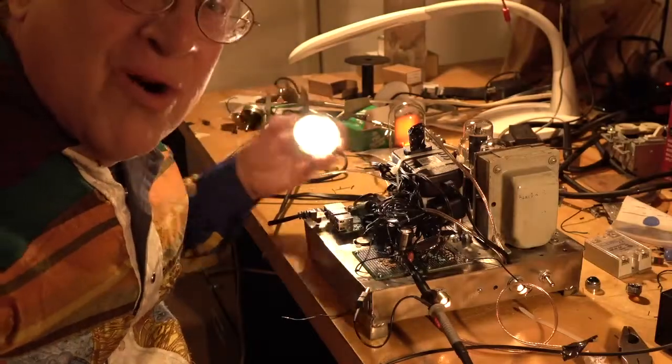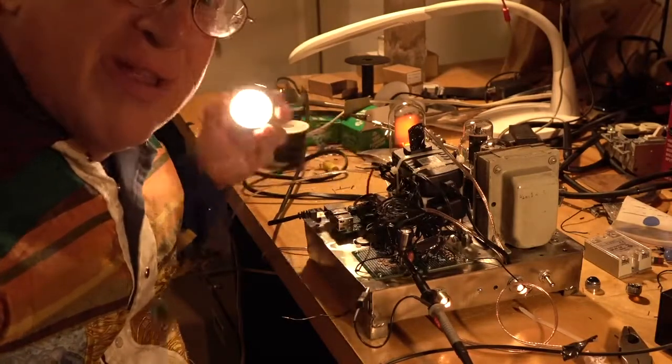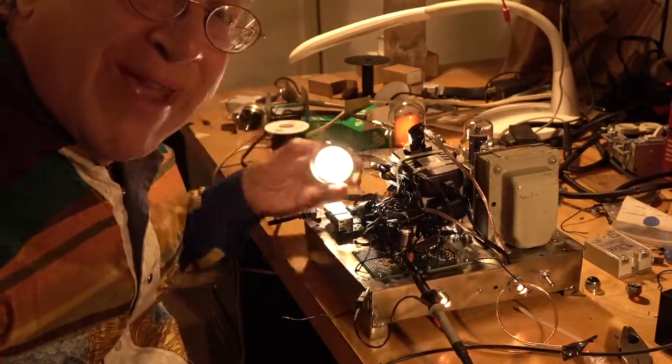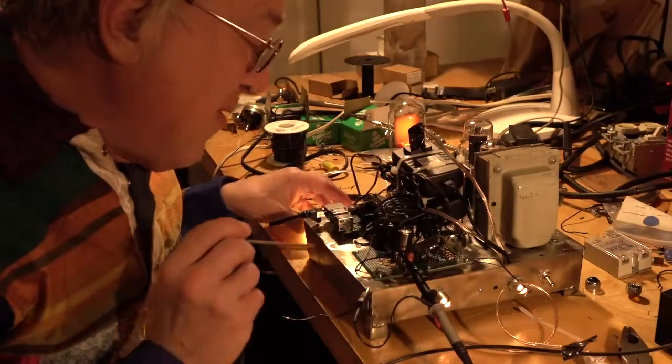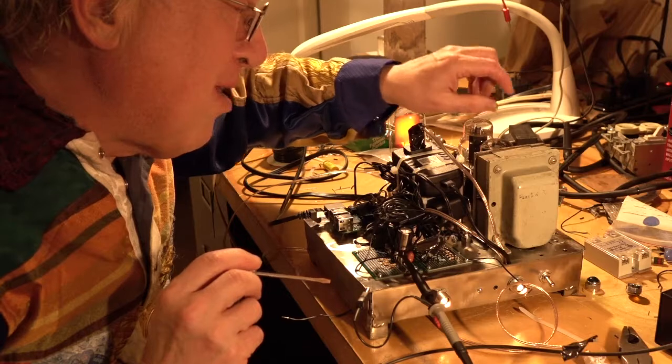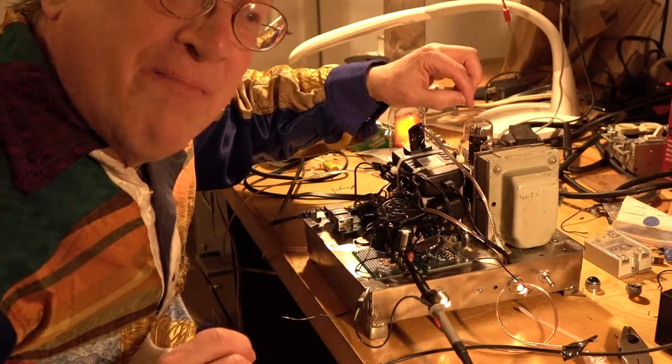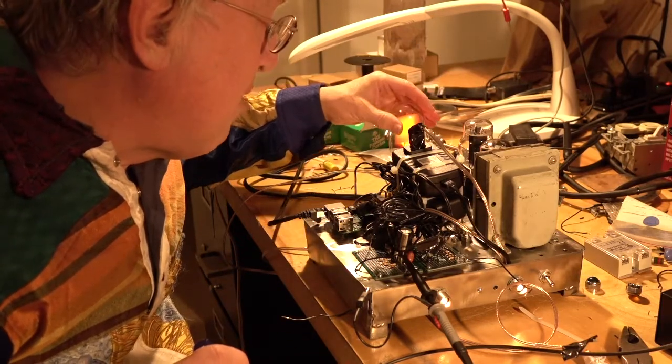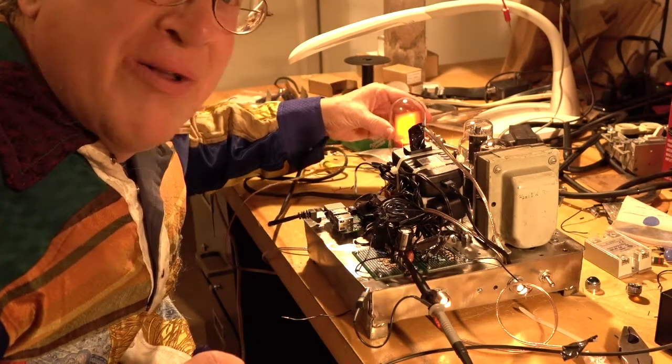I'm going to wave this back and forth. Maybe you can see a flicker. I don't know if the camera can handle it. The other signal goes to a power amplifier, which is a 6L6G beam power tube that powers the neon bulb.